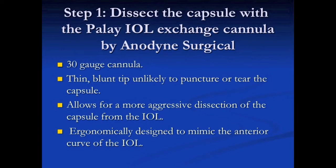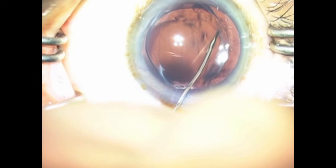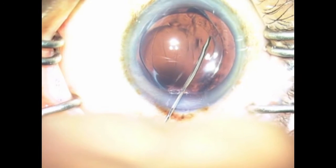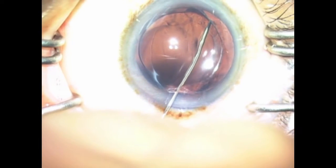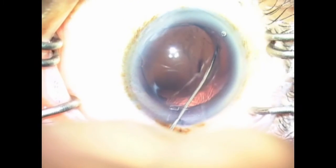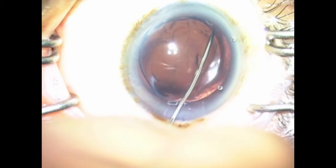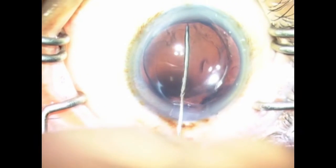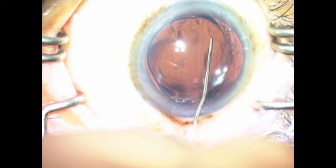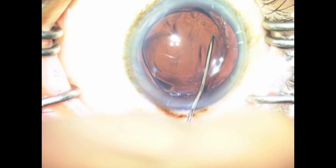Step 1. Dissect the capsule with the PAL-A intraocular lens exchange cannula. This specifically designed cannula is thin and blunt, which facilitates dissection of the anterior capsule from the intraocular lens. Because it is blunt, it is less likely to tear the capsule and it allows for a more aggressive dissection.